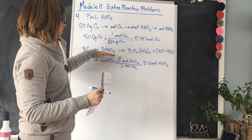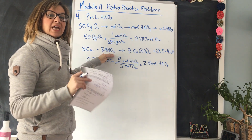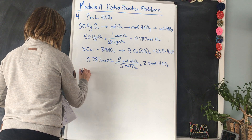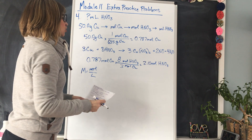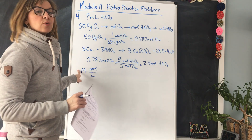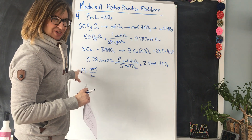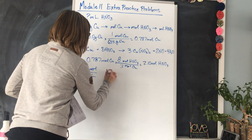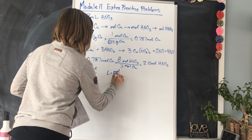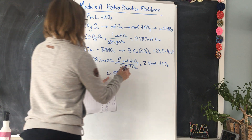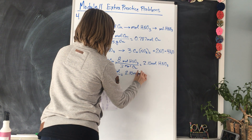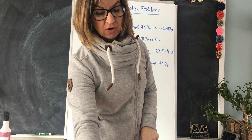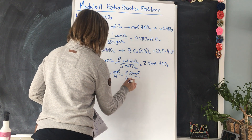That's how many moles of HNO3 we need to completely react with 50 grams of copper. But the question asks for milliliters. Molarity = moles per liter, so liters = moles ÷ molarity. For HNO3 we have 2.10 moles, and our stock room has a 3.50 molar solution.